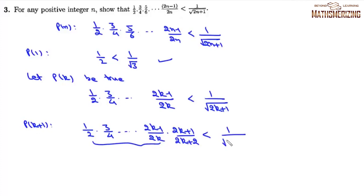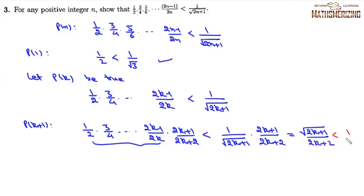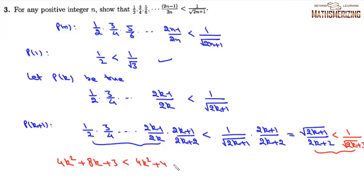We need this to be less than 1/√(2k+3). Squaring and cross-multiplying gives 4k² + 8k + 3 < 4k² + 8k + 4, which is always true. Therefore P(k+1) is true, and by mathematical induction the result holds for all positive integers n.